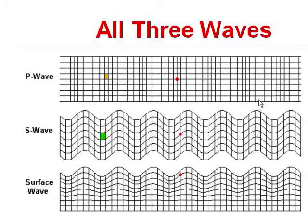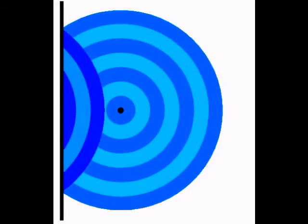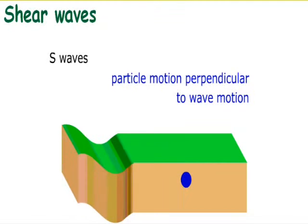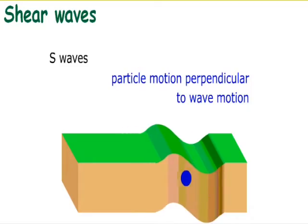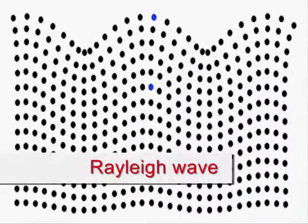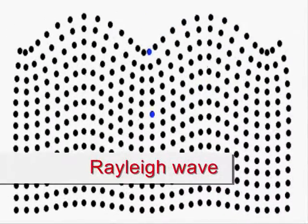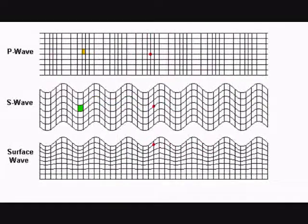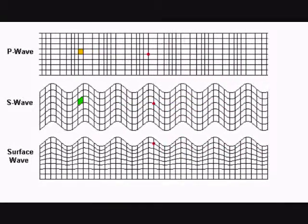There are three types of seismic waves that are of principal interest to geoscientists and petroleum engineers. We'll look at water waves to give us a better understanding of how they work. The first wave is the P wave, or compression wave. The second is the S wave, or shear wave. The third is called the Rayleigh wave, or surface wave. All three are used in seismic work.